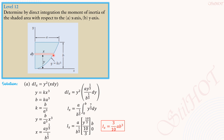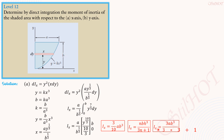To check, we use the general formula from Level 4: Ix equals n·b·h³ over (3·(3n + 1)). With n equals 3, b equals a, and h equals b, we get 3·a·b³ over (3·(3·3 + 1)) equals 3ab³ over (3·10) equals 3/10 · ab³. This matches our direct integration result.